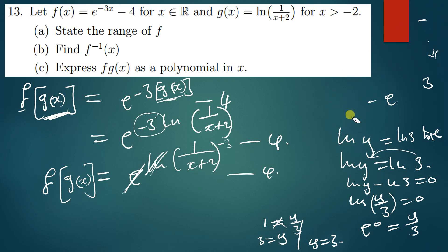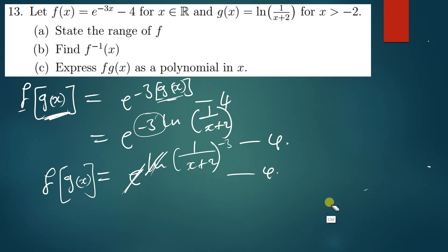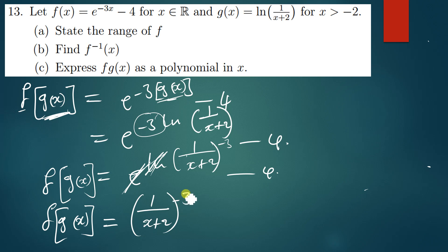Once we cancel e and ln, we just drop down the argument. So f(g(x)) equals (1 over (x+2)) to the power negative 3, minus 4.